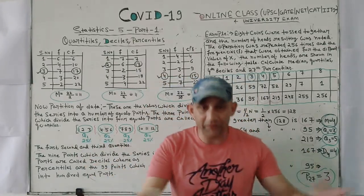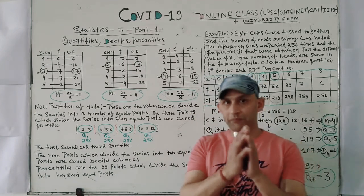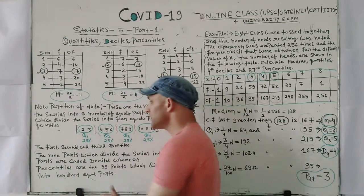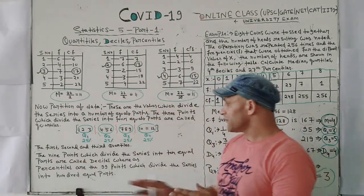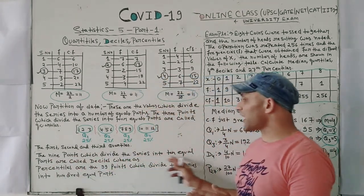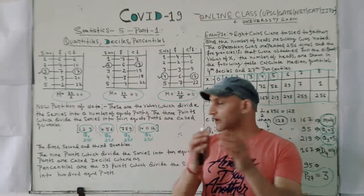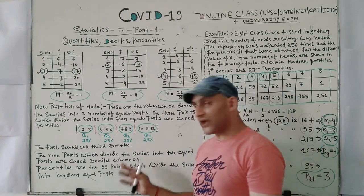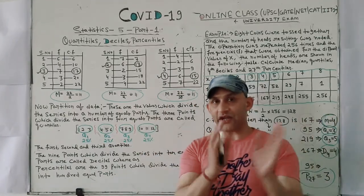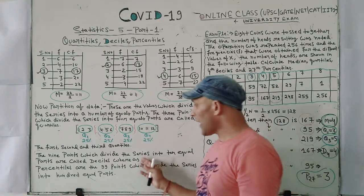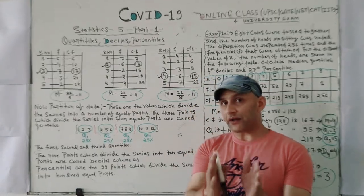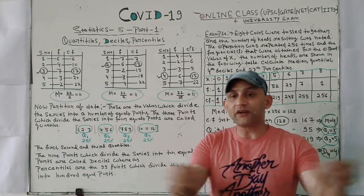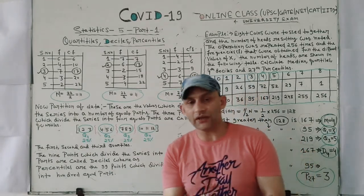Suppose you have a very big data set and dividing into four parts is still not enough for a good conclusion. In that case, you divide into 10 equal parts. The nine points which divide the series into 10 equal parts are called deciles. We do this to get a better idea from the data.